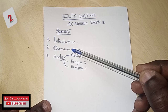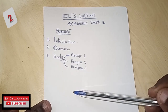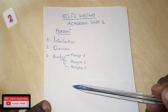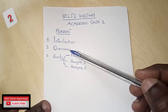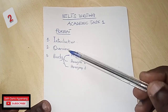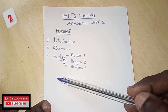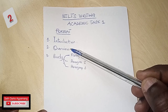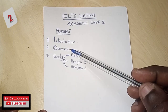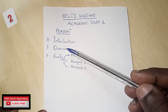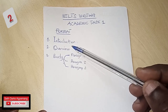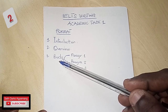With the overview, you have to talk about two distinct things about the diagram. I usually look at the highest and the lowest. The overview is more or less like a conclusion. Some people prefer to put the overview after the body, but I don't advise that — go with introduction first, then overview. One important thing: if you don't write the overview, you automatically fail Task 1. That is why it is advisable to write your overview right after the introduction.